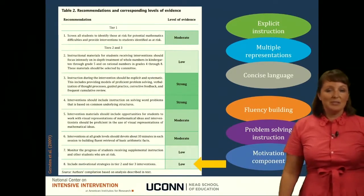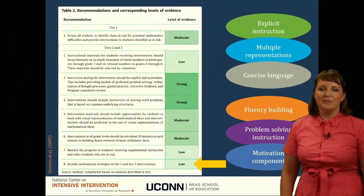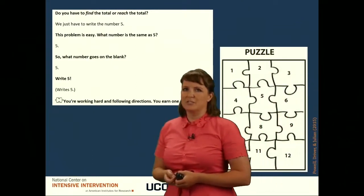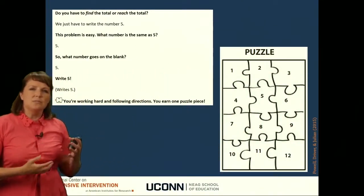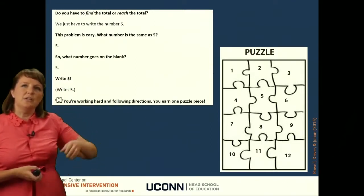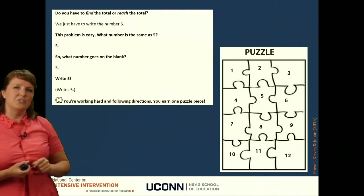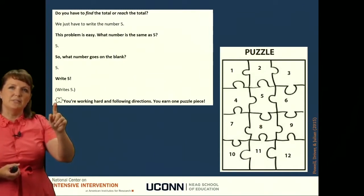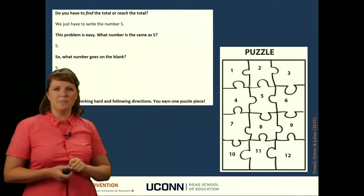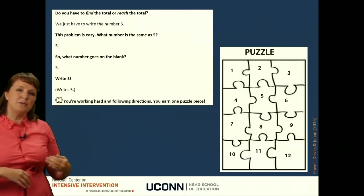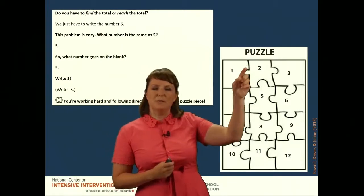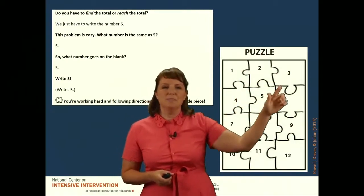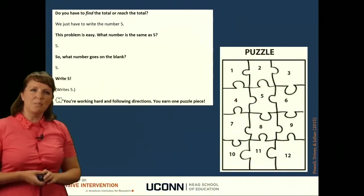The way to talk about this is really just to show you some examples. This is a motivational component that comes from an intervention for first grade students working on understanding the equal sign and solving different types of equations. Here is an example protocol from that intervention. The student writes five, and I see a puzzle piece. It says, 'Oh, you're working hard and following directions — you earn one puzzle piece.' Students would get a puzzle piece throughout the lesson, put those puzzle pieces on this puzzle, and then later color them in. When students filled up the puzzle, they got to choose a very small prize from a prize box.